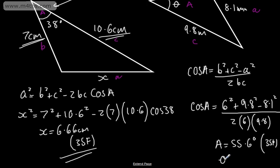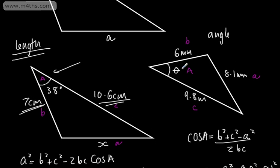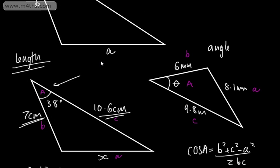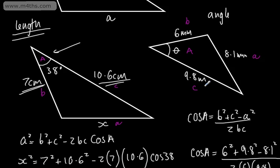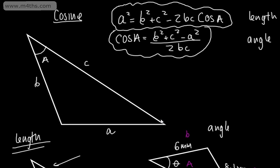In this case we've got theta, and we can set that equal to A — it's entirely up to you if you want to call it A or theta. So theta is 55.6 degrees, correct to 3 significant figures. That's the cosine rule: if we're using it for missing lengths, it's when we have an enclosed angle; if we're using it for missing angles, it's when we have 3 sides. We discussed that in the first video.